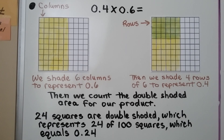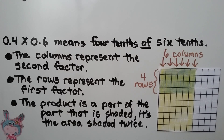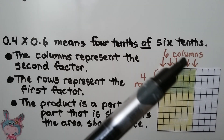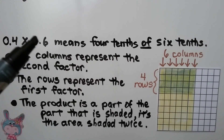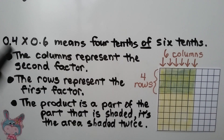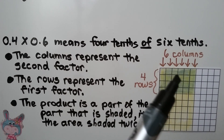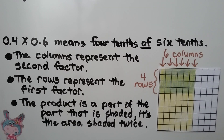We shade them coming across, then we count the double-shaded area for our product. There are 24 squares that are double-shaded, which represents 24 of 100 squares, which equals 24 hundredths. 4 tenths times 6 tenths means 4 tenths of 6 tenths. The columns represent the second factor — these 6 columns represent the 6 tenths — and the rows represent the first factor, 4 tenths. The product is the part that is shaded twice.